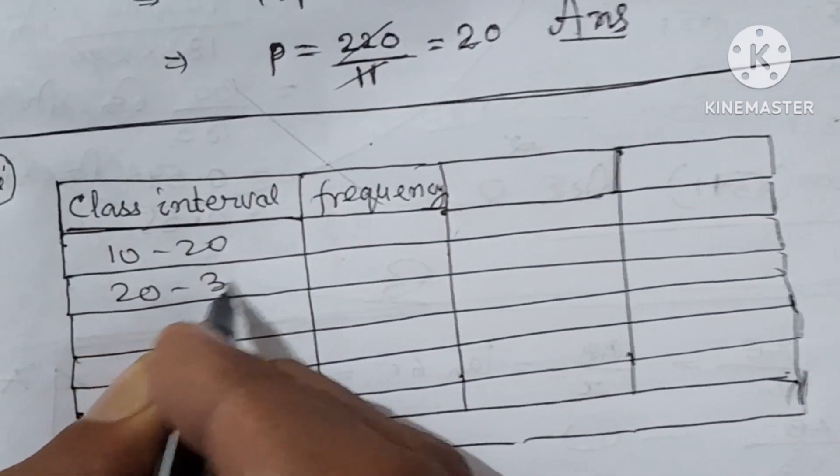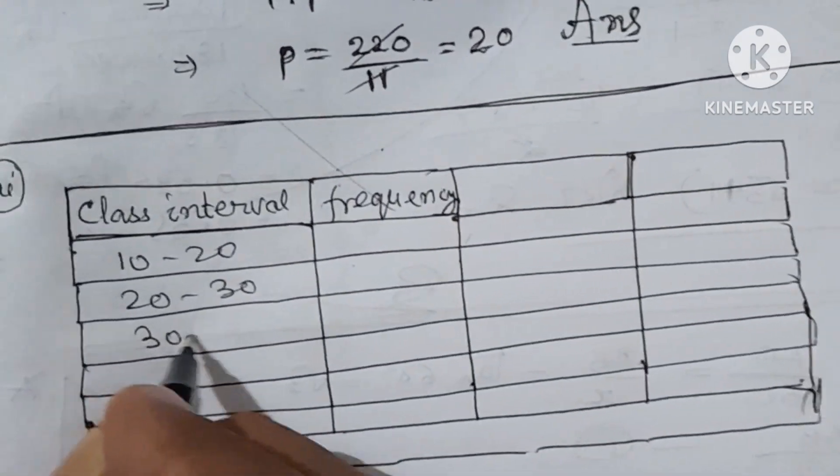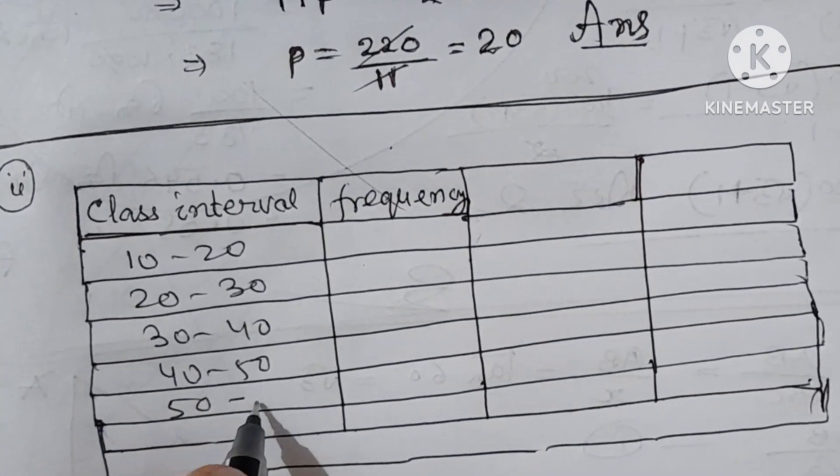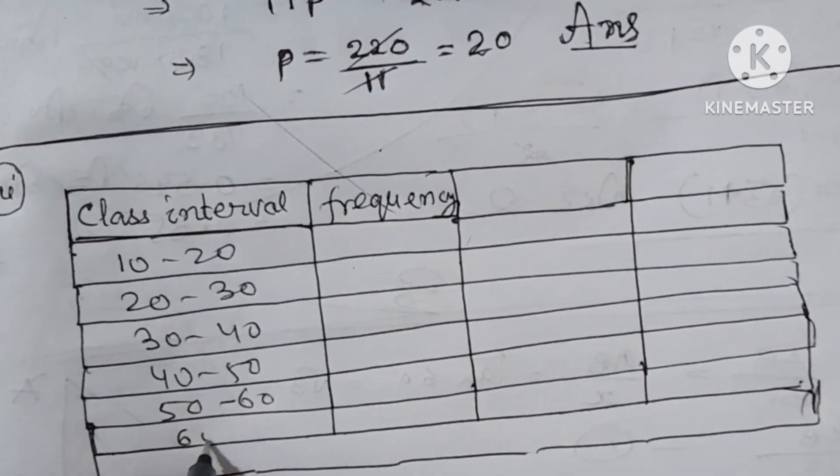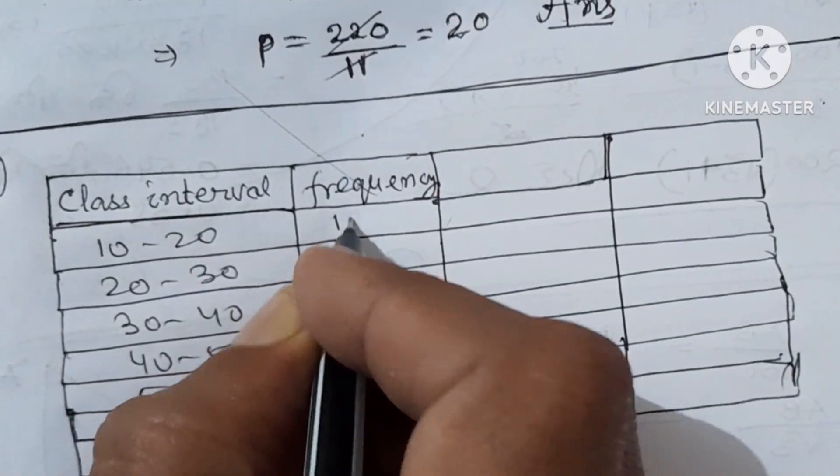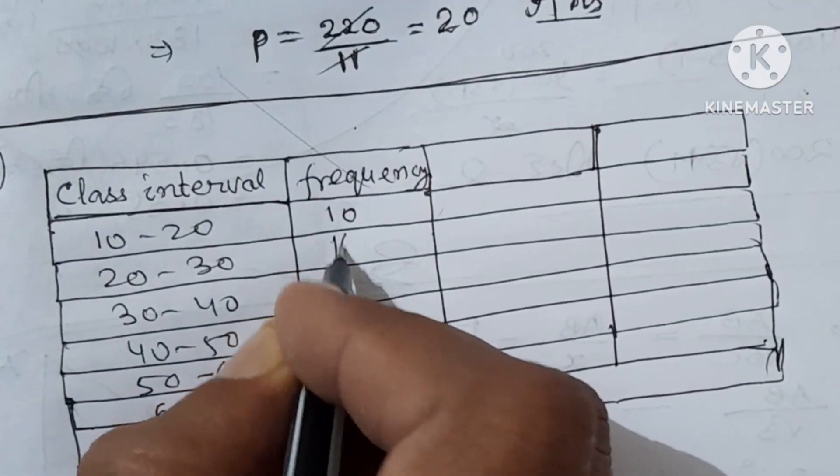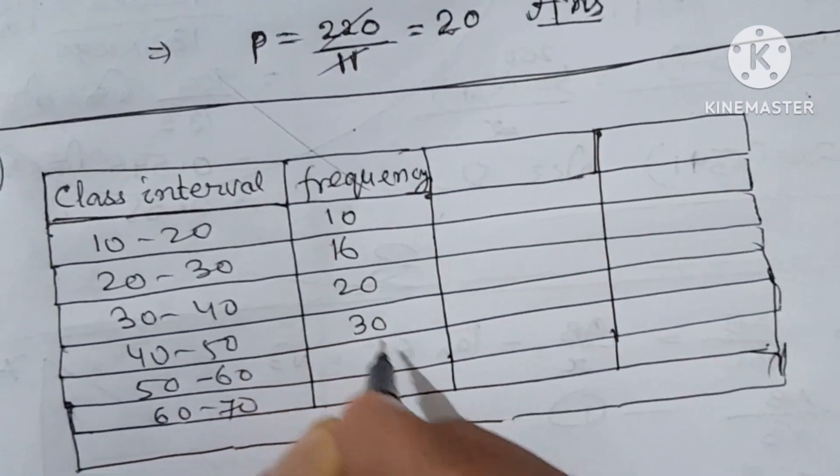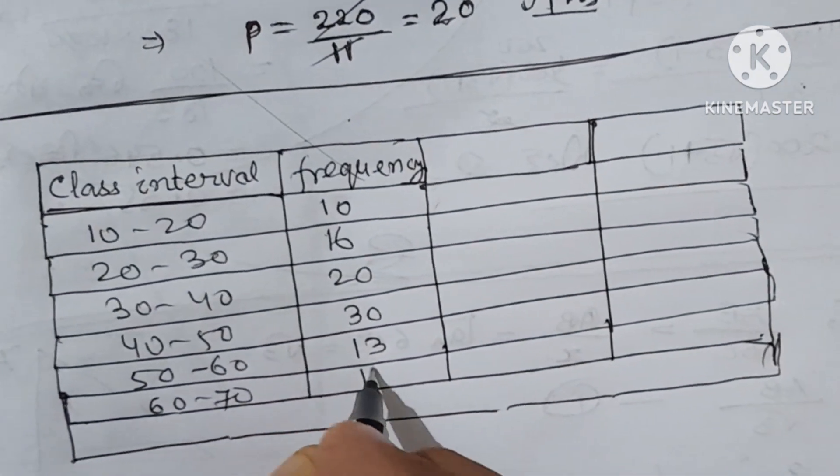From the question we'll note down the class interval: 10-20, 20-30, 30-40, 40-50, 50-60, and 60-70. Frequency will note down from the question. It is given like 10, 16, 20, 30, 13, and 11.